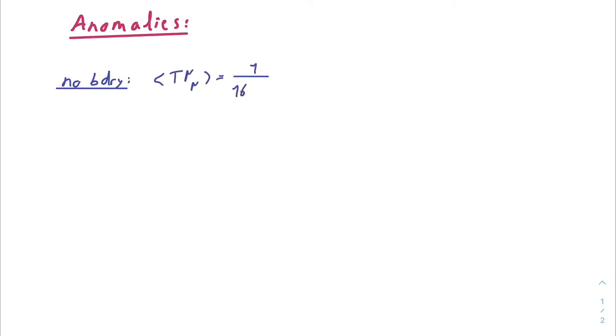In 4D, you've got two anomaly coefficients without a boundary, which are C and A, and they have interesting properties to classify CFTs, and they give us non-perturbative information on different theories.